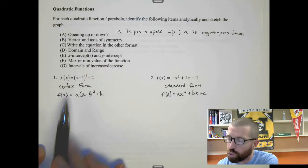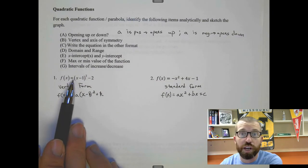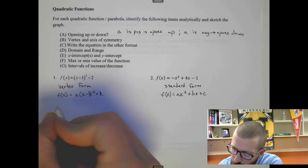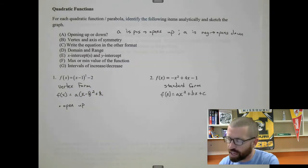Let's just focus on number one. Here, a is just one. It's the number in front of the parentheses, and it's positive. So this is going to open up.